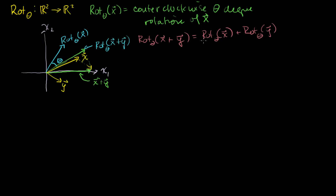Now let's see if that's the same as rotating x and y individually and adding them. If we rotate y through an angle of theta, it looks something like this — that's the rotation of y through angle theta. The rotation of x was right there. So if we add the rotation of x plus the rotation of y, we actually get the rotation of x plus y. At least visually, it satisfies that first condition.